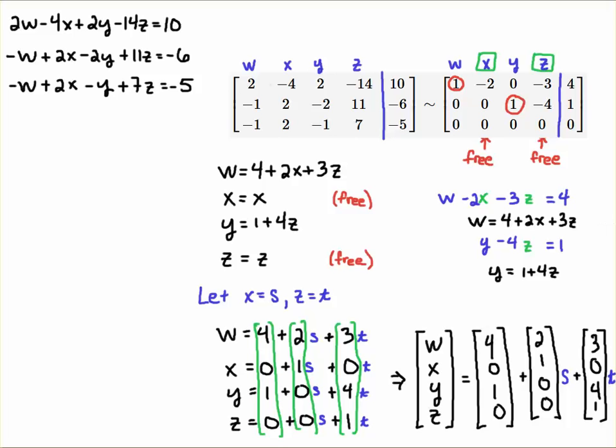So you can play this game. Just go ahead and try letting S equal 1, let T equal 1, let S equal 2, let T equal 3, let S equal minus 5, let T equal minus 7. Just start picking numbers haphazardly. Add all this together to get yourself a single vector and then see if it satisfies the system and you will see that it does.